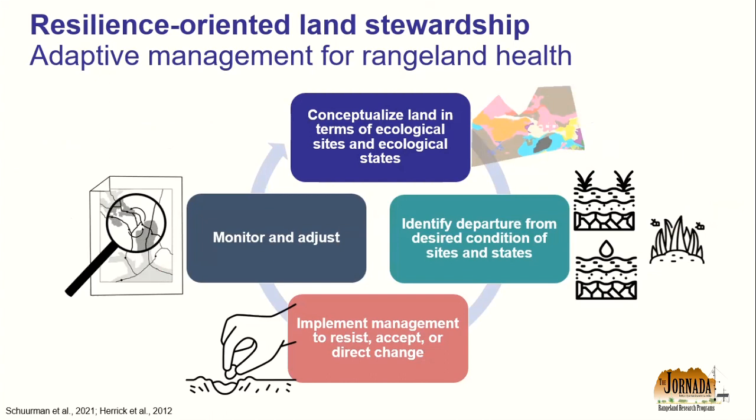Adaptive management means we conceptualize these variable and diverse rangelands in terms of ecological sites and states — looking at that shifting mosaic and making sense of it with this framework. We identify departure from the desired condition of those states in terms of soil stability, biotic integrity, and hydrologic function. After that assessment, we implement management options to resist, accept, or direct change on those states, then monitor outcomes and adjust if things aren't going in the direction we like — an adaptive cycle.